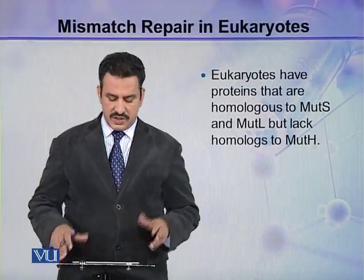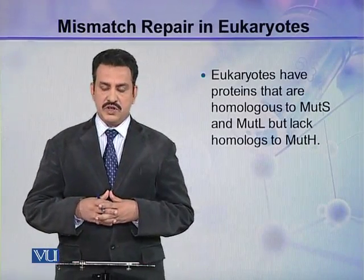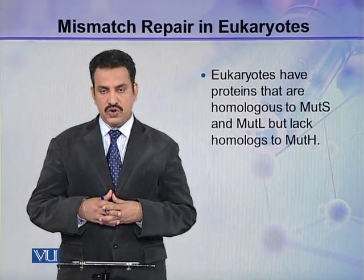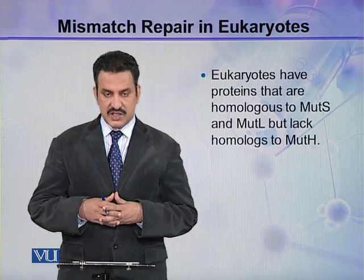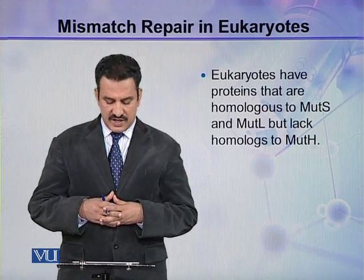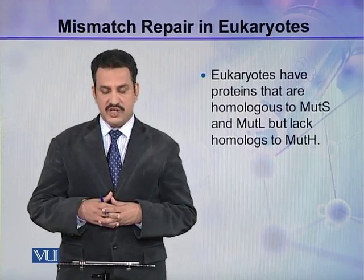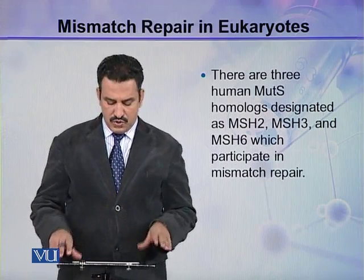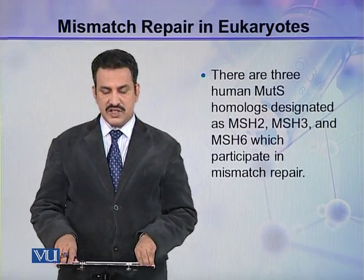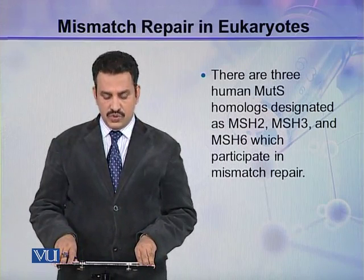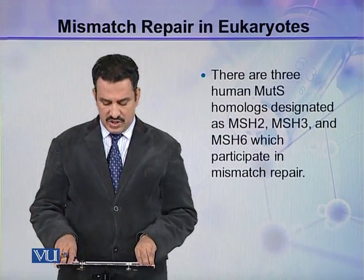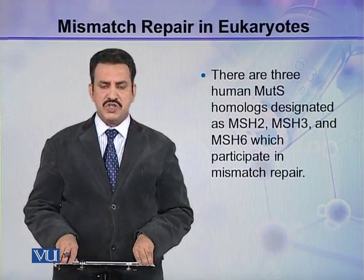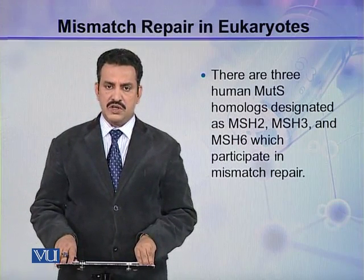Let us see the mismatch repair in eukaryotes. Eukaryotes have proteins that are homologous to MutS and MutL, but they lack homologues to MutH. There are three human MutS homologues designated as MSH2, MSH3, and MSH6, which participate in the mismatch repair system in eukaryotes.